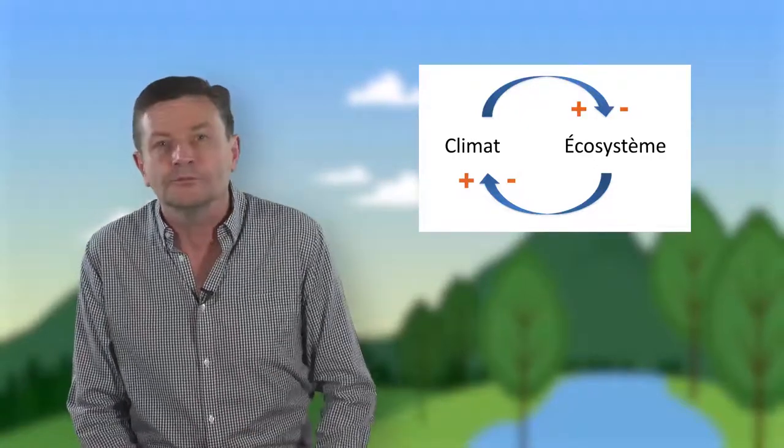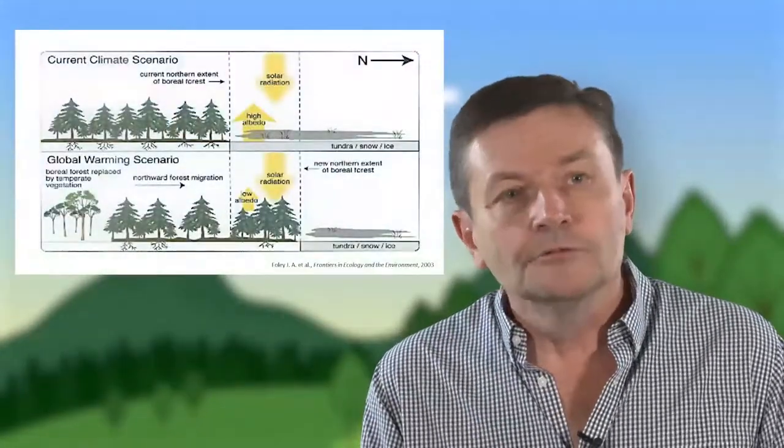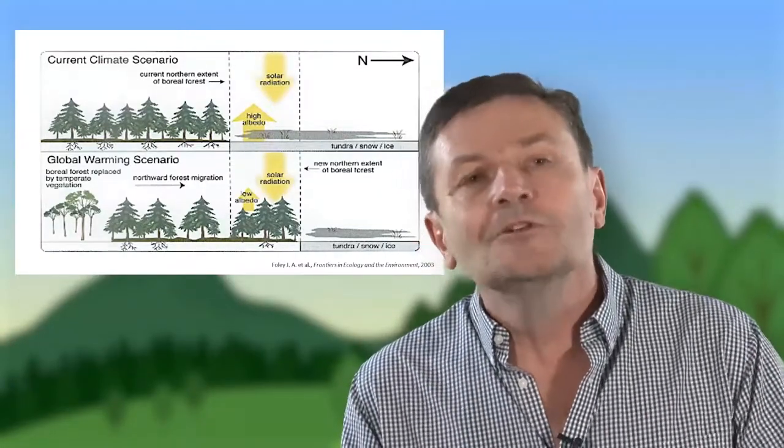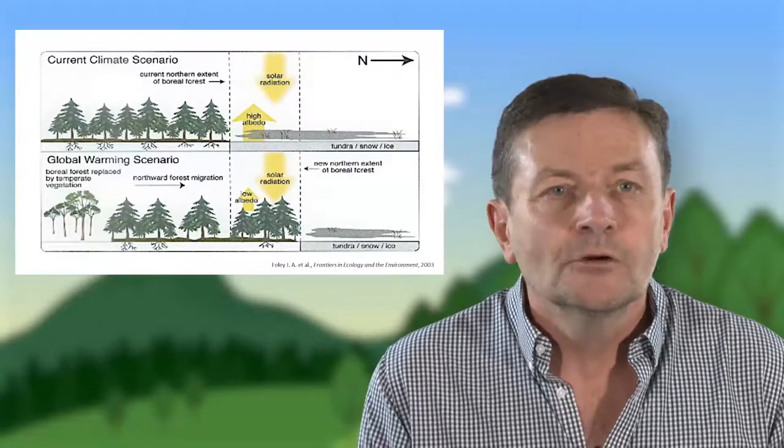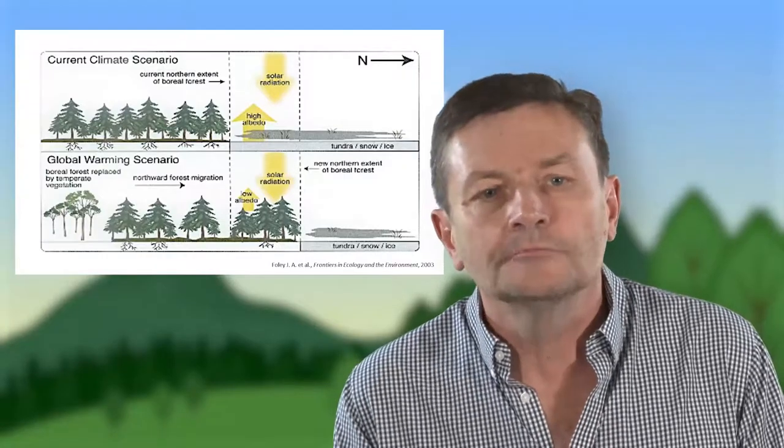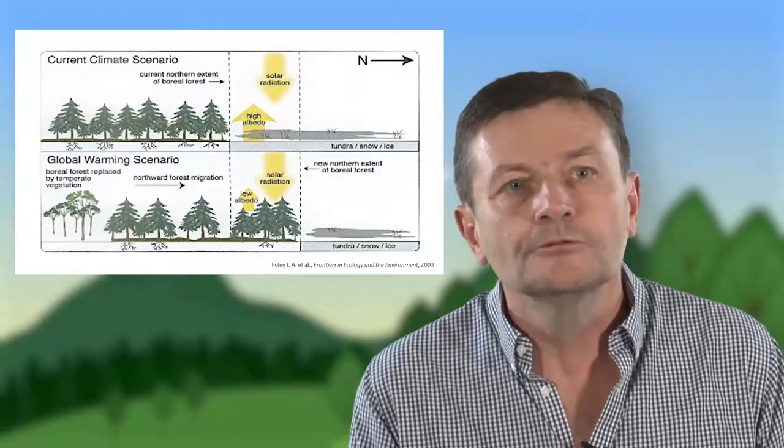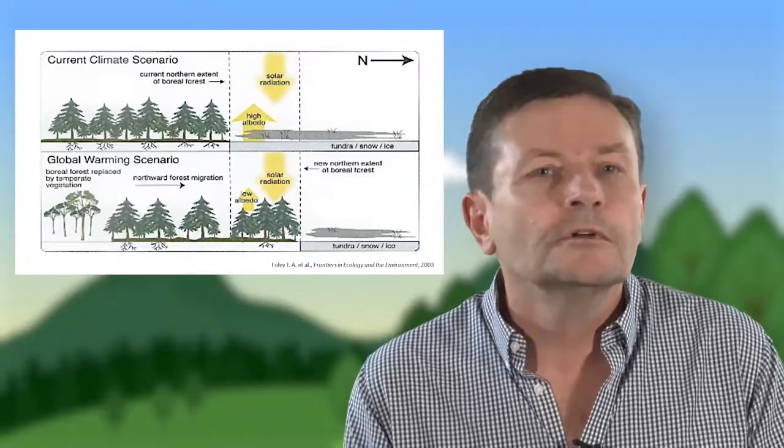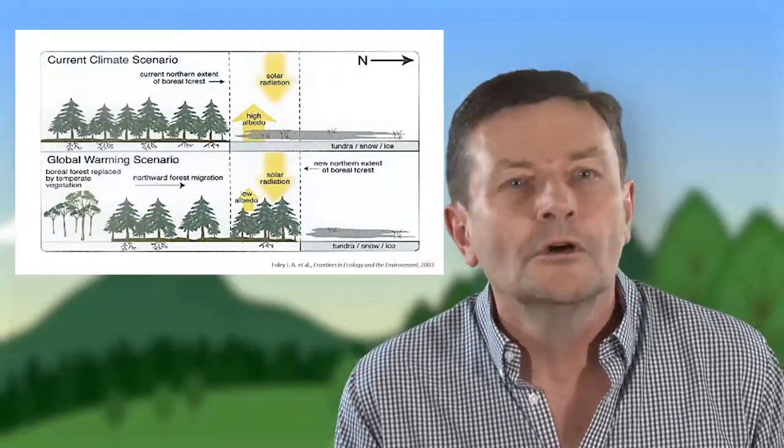Alors on peut en prendre un exemple à partir d'un phénomène qui est en cours actuellement dans les régions froides, qui est l'avancée de la taïga, c'est-à-dire une forêt de conifères, sur la toundra, qui est un couvert bas d'herbes et de lichens. Aujourd'hui, avec le réchauffement, la taïga, la forêt, gagne sur la toundra. Alors on pourrait se dire que c'est intéressant pour le changement climatique, puisque la forêt stocke du CO2. Sauf que la forêt, elle a une couleur sombre par rapport à la couleur de la toundra. Et du coup, la forêt absorbe l'énergie lumineuse et la réémet sous forme d'infrarouge thermique. Et donc elle contribue au réchauffement climatique.